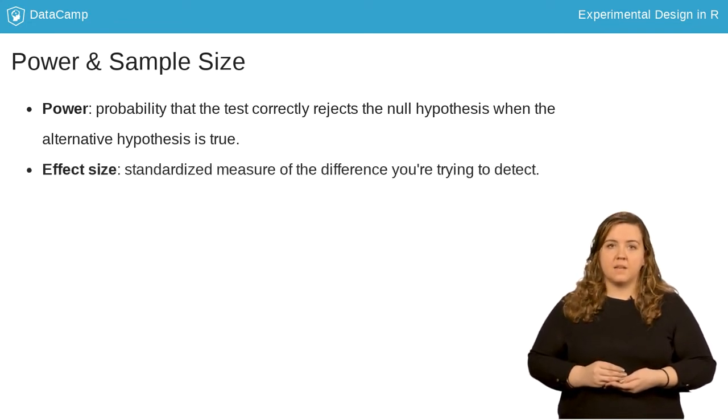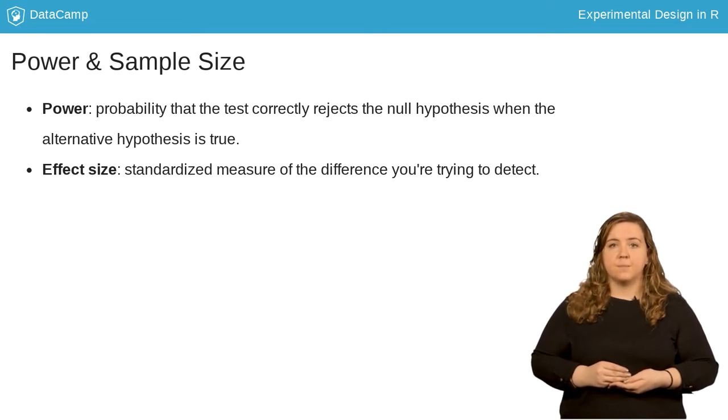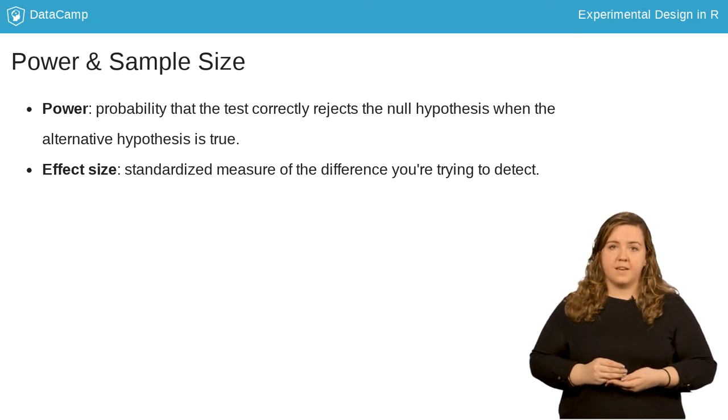Effect size, in the context of power analysis, is a standardized measure of the difference you're trying to detect, calculated as the difference between group means divided by the pooled standard deviation of the data. It's easier to detect a larger difference in means than a smaller one.